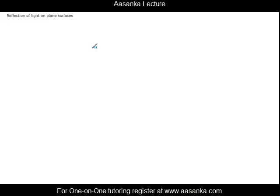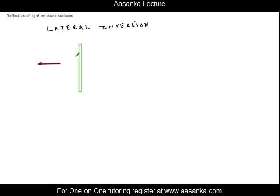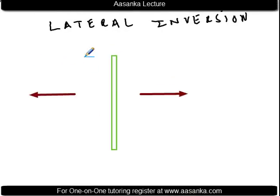Based on the properties of reflection, something happens that we call lateral inversion. In English, lateral means sideways, and inversion means change — so sideways change is lateral inversion. Suppose you have a mirror and you place an arrow in front of it; in the mirror, the arrow will appear sideways inverted — so from an arrowhead going to the left, it becomes an arrowhead going to the right in the image. This is called the property of lateral inversion, and it is only because of the reflection properties we have discussed.